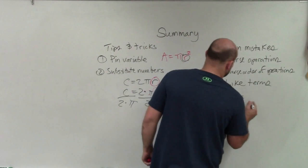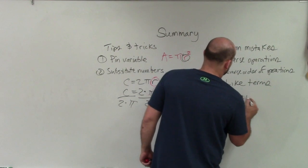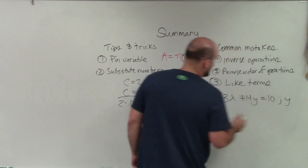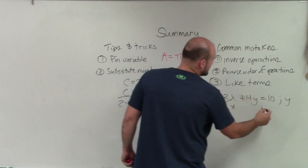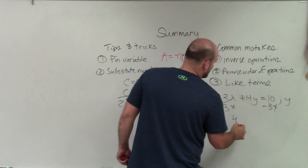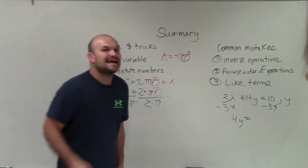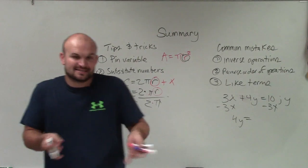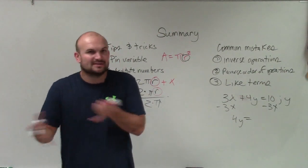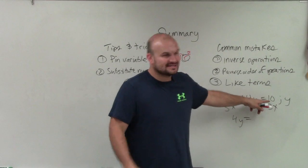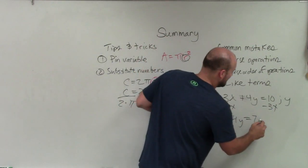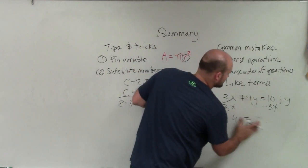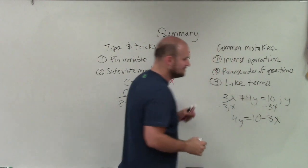A lot of times I have, you know, 3x plus 4y equals 10. And let's say I want to solve for y, right? So a student says, okay, well, I'll subtract 3x, subtract 3x. And then they say, well, 4y is equal to, well, what's 10 minus 3x? And they kind of totally forget that 10 is a number and 3x is a number times a variable, right? So those aren't like terms. This has an x. This does not. So you cannot combine them and say it's 7x or it's the number 7. It's just simply 10 minus 3x, all right?